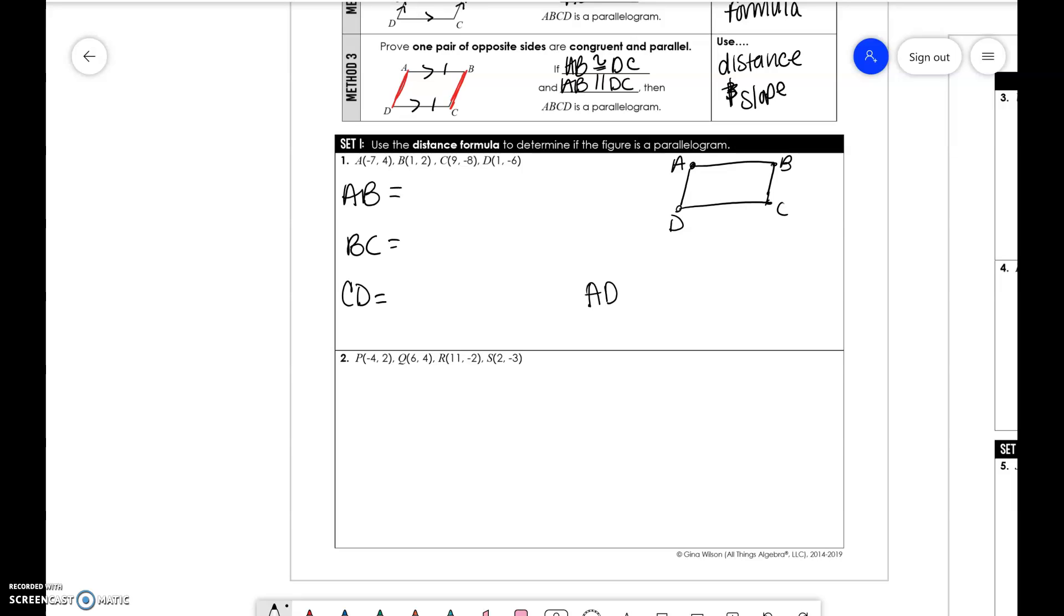I'm just going to write the answer to this because we know how to find the distance formula. We get the square root of 68, square root of 164, square root of 68, square root of 164. You have that AB and CD are the same, and the other two sides. So yes, this is a parallelogram.